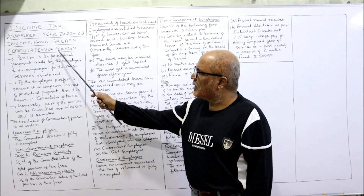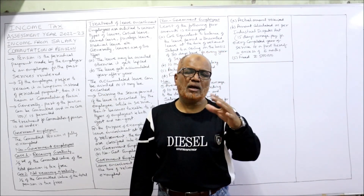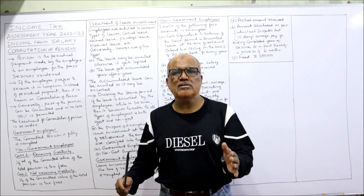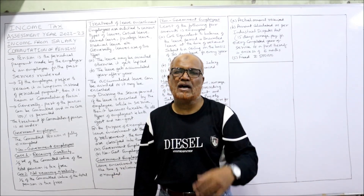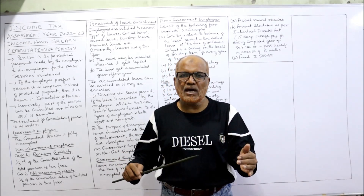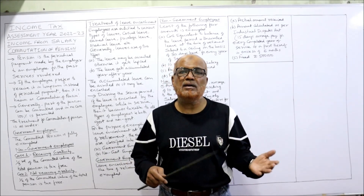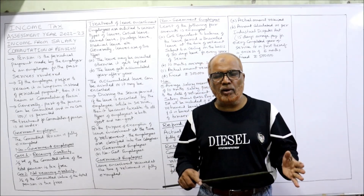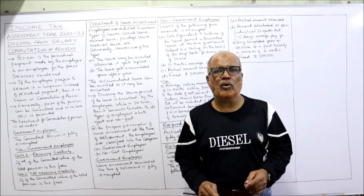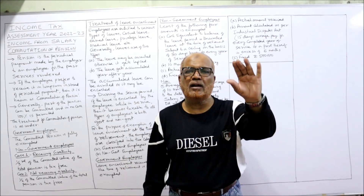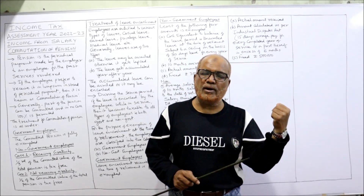Pension is of two types: periodical pension and commuted pension. Periodical pension means monthly pension which the employer gives to the employee after retirement. Before retirement the employee gets a salary; after retirement the same employee may get a pension. According to the provisions of the Income Tax Act, periodical pension received by the employee is fully taxable under the subhead salary.